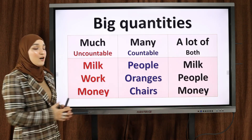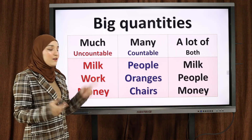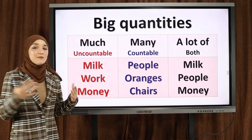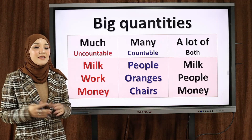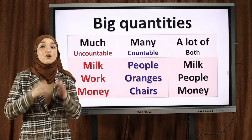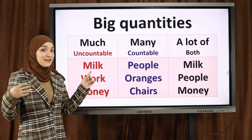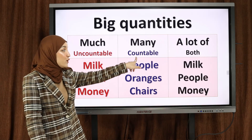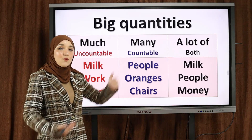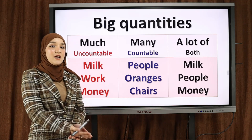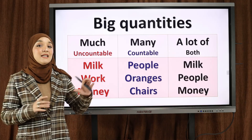Much is used when we have an uncountable noun — something that is uncountable. هل تتذكرون الأشياء الغير قابلة للعد؟ Uncountable — some things that we cannot count, لا يمكننا أن نحسبها. They do not have a plural form — فقد يأتون في صيغة المفرد، ليس لديهم صيغة في الجمع.